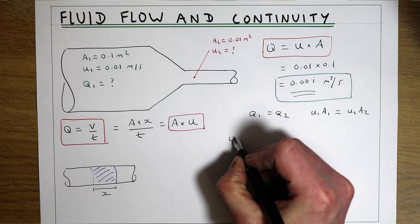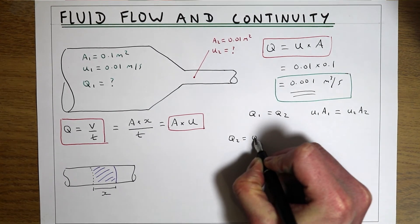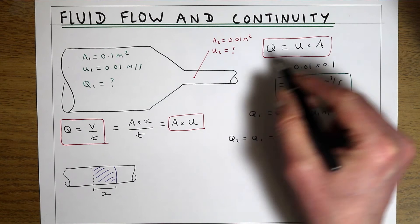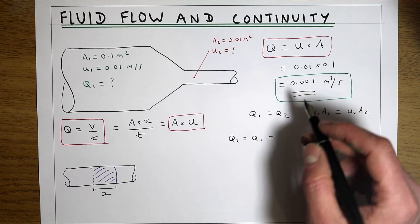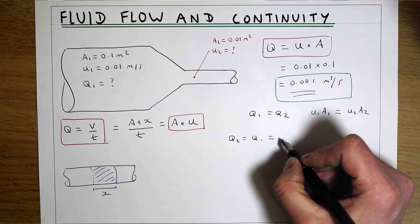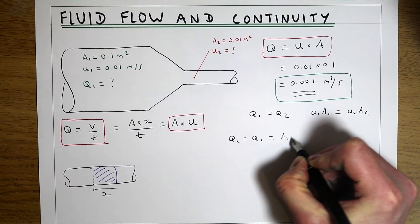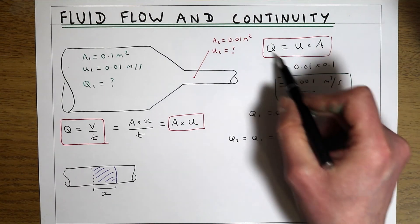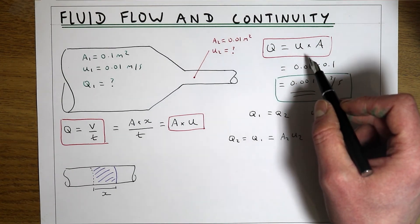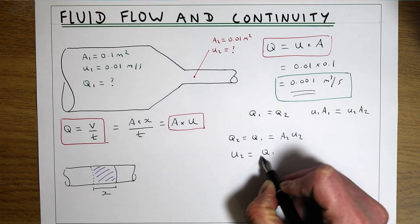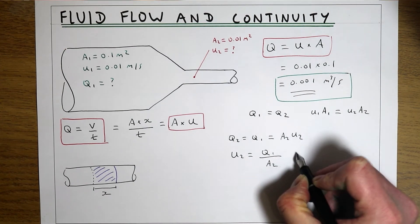We know that Q2 equals Q1, which at this point here, if we rearrange the equation Q equals u times A, this Q1 is going to be A2×u2. To get u2, what the question is asking for, we just need to rearrange so u2 is actually going to be Q1 divided by A2.